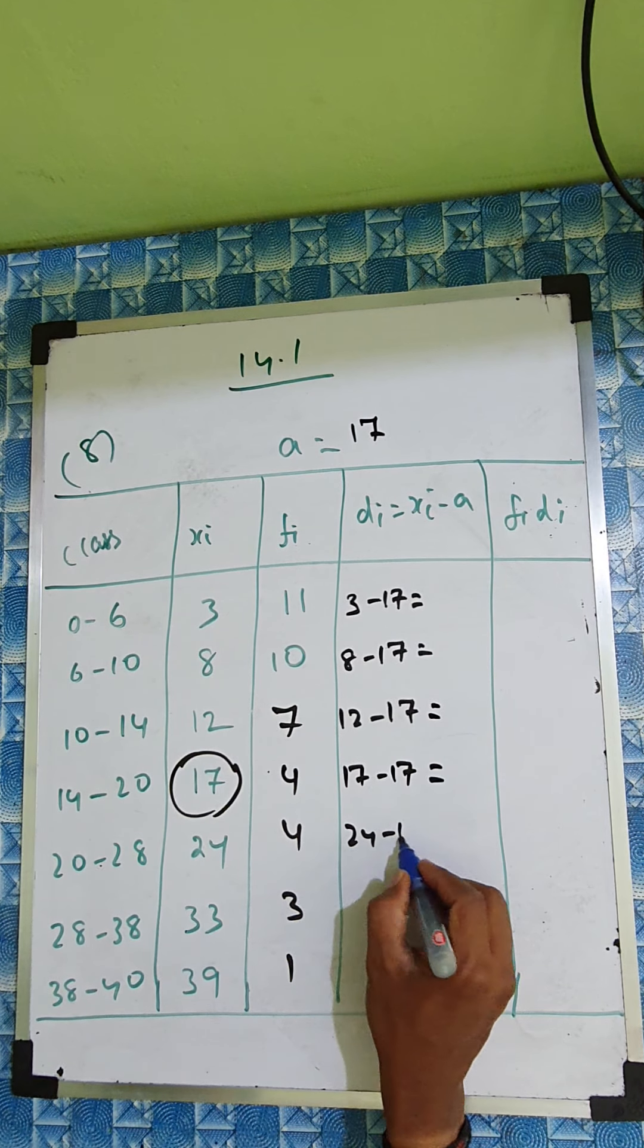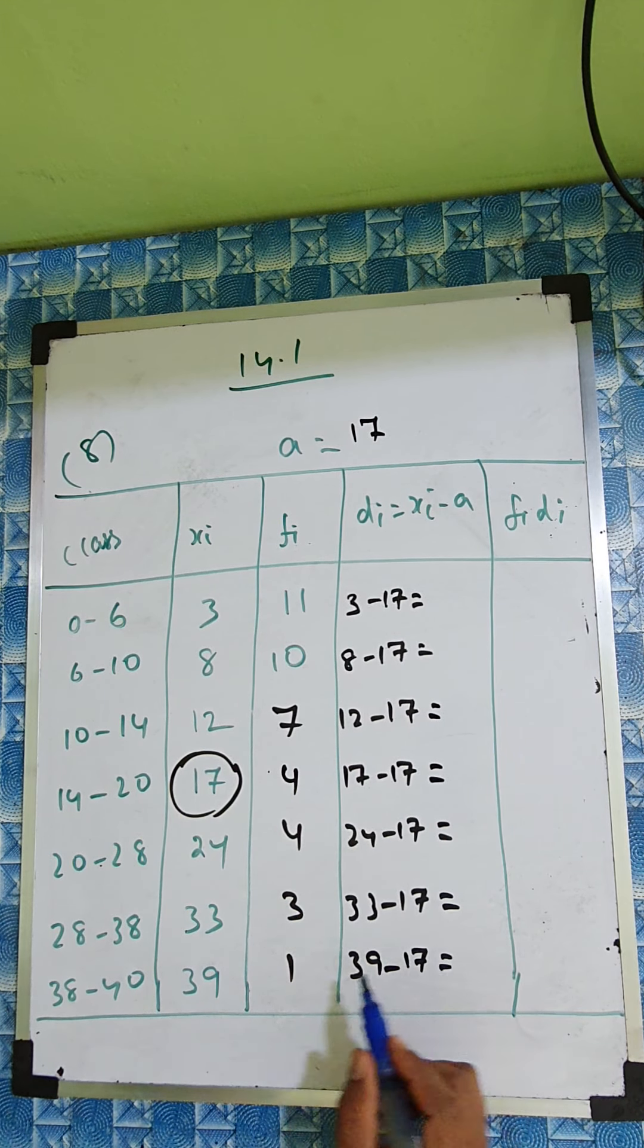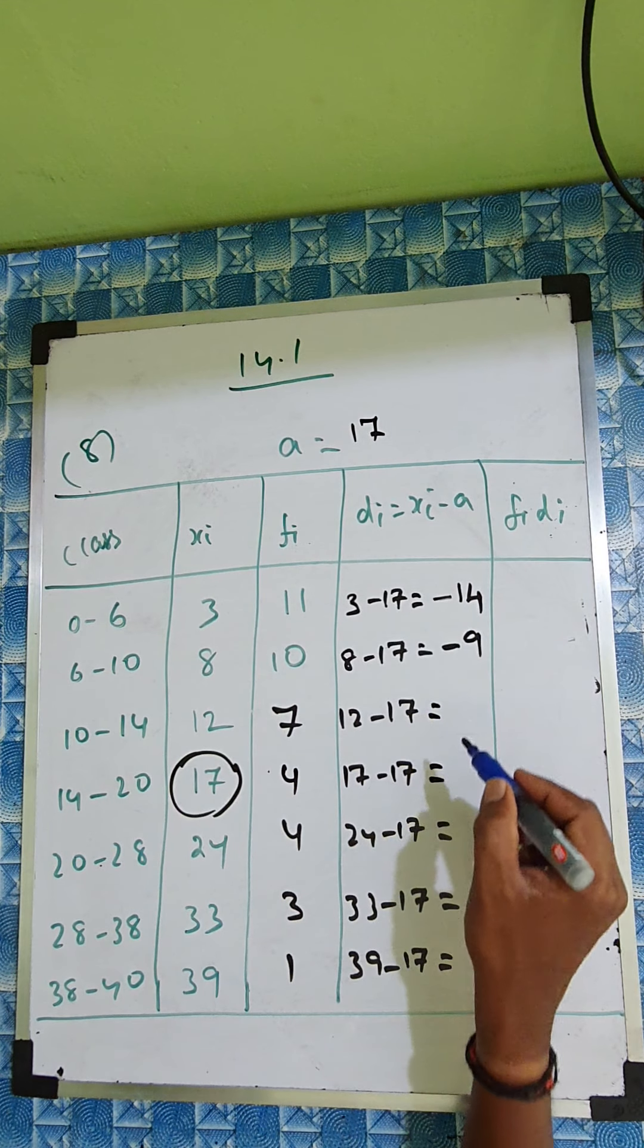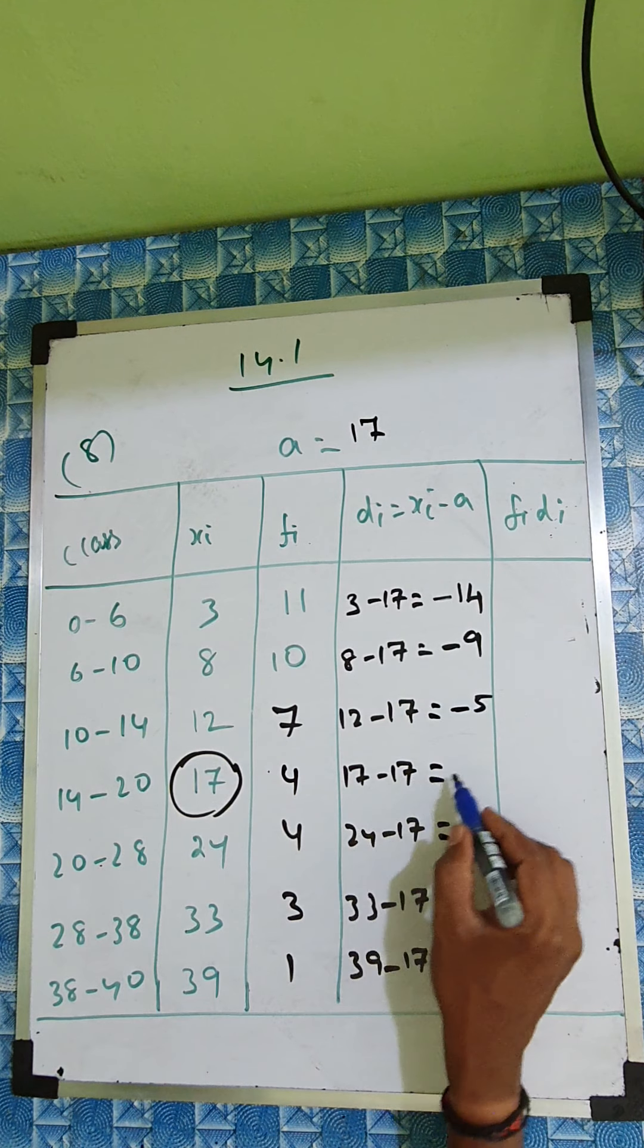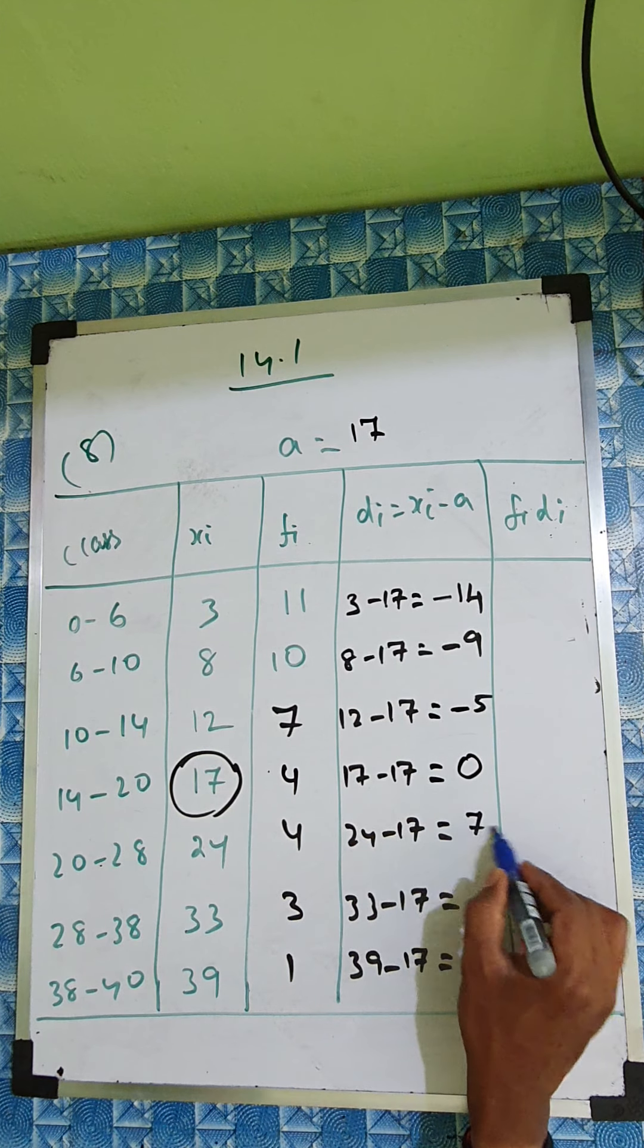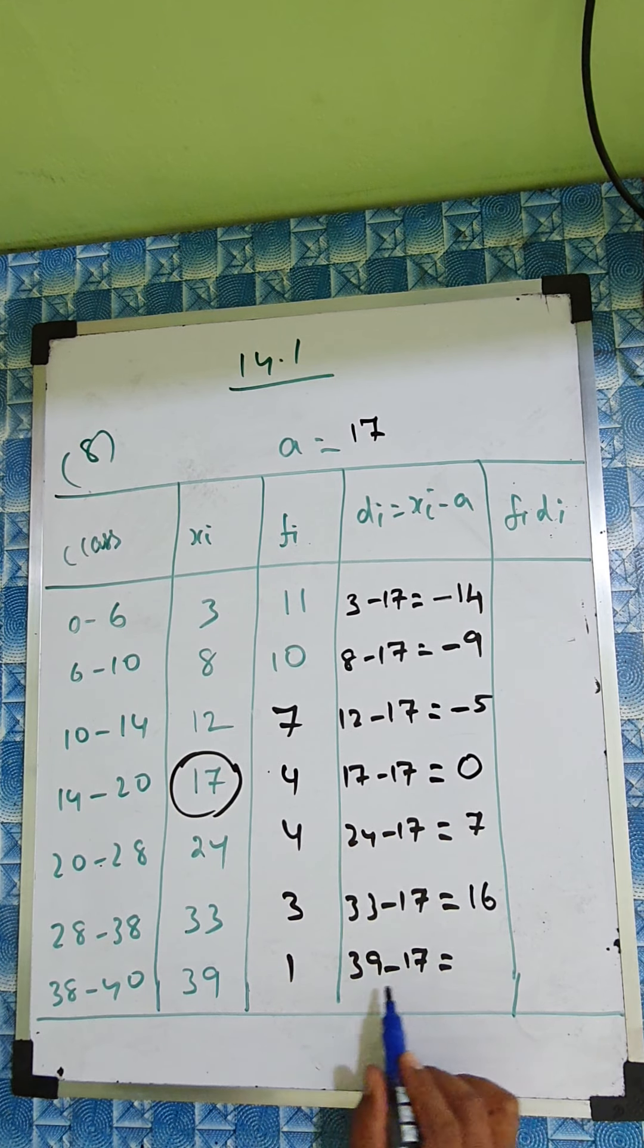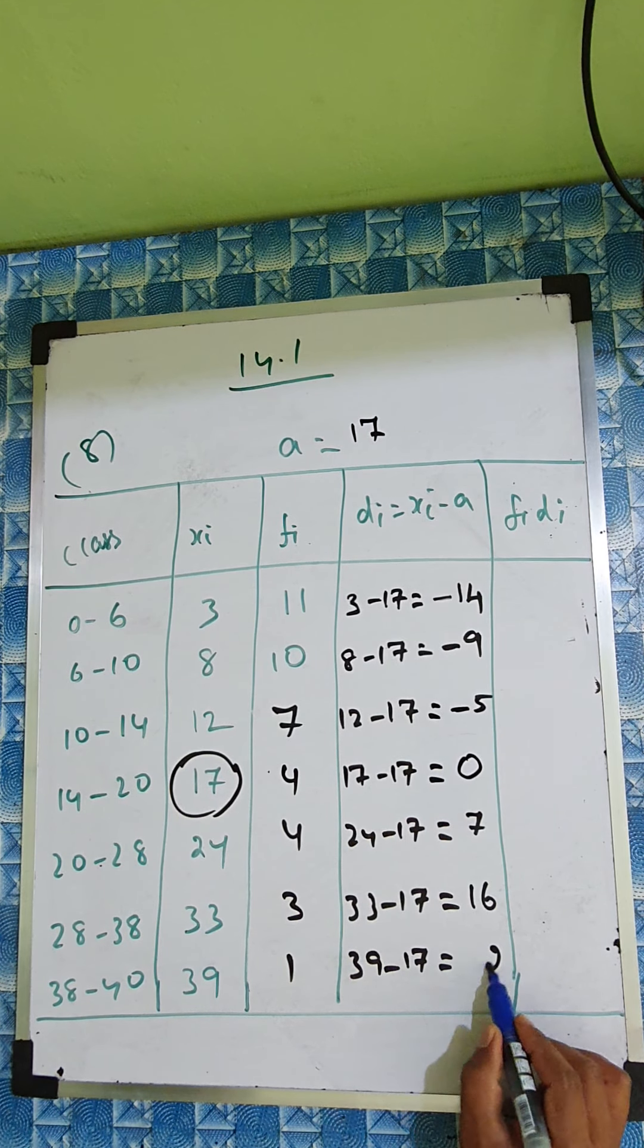So xi: 3 minus 17, 8 minus 17, 12 minus 17, 17 minus 17, 24 minus 17, 33 minus 17, and 39 minus 17. So 3 minus 17 is minus 14, 8 minus 17 is minus 9, 12 minus 17 is minus 5, it'll be 0, 24 minus 17, 33 minus 17, 39 minus 17. So that's 7, 16, and 22.